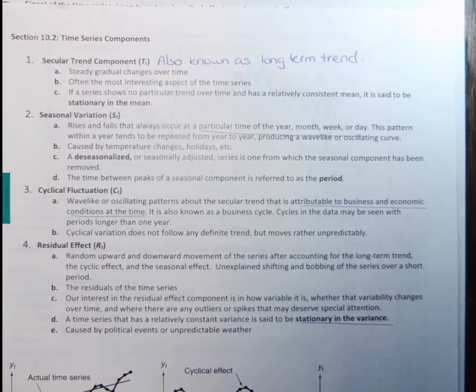We could also talk about residual effect. And so this is the random or upward or downward movement of the series accounting for long-term trend of the cyclical effect and seasonal effect. It's unexplained shifting and bobbing of the series over a short period. And then the residuals of the time series, so that's what this is in terms of what you've seen before with residuals. And our interest in the residual effect component is how variable it is, whether the variability changes over time, whether there are any outliers or spikes that might deserve special attention. And a time series that has a relatively constant variance is said to be stationary. And this can be caused by political events or unpredictable weather.